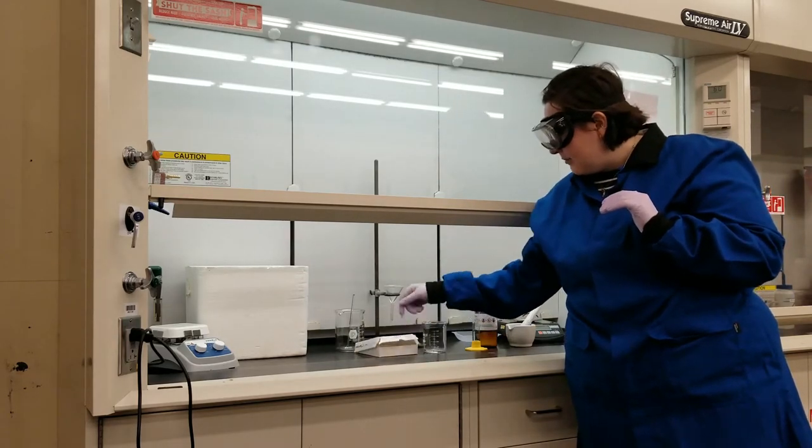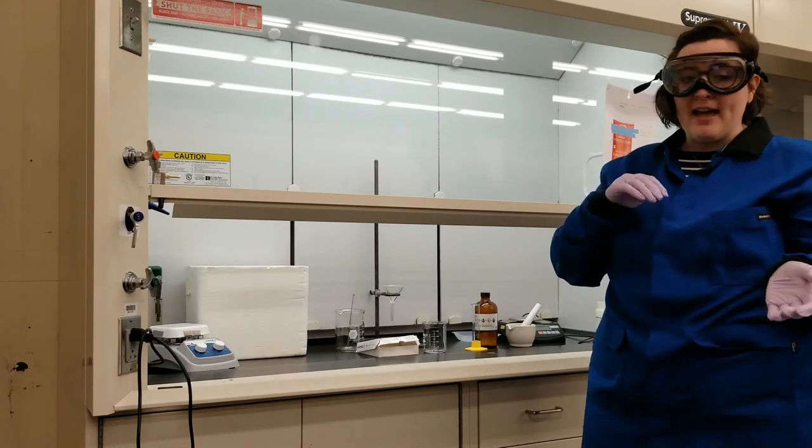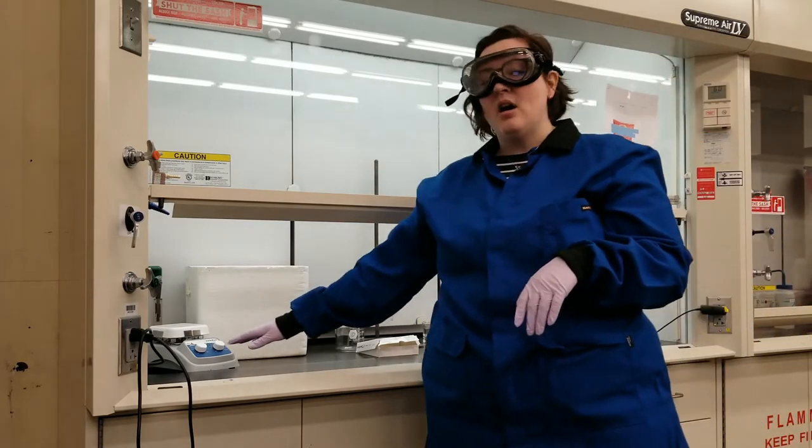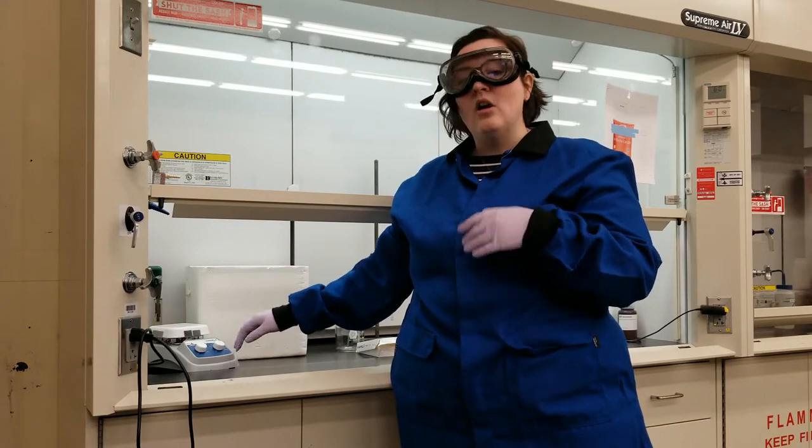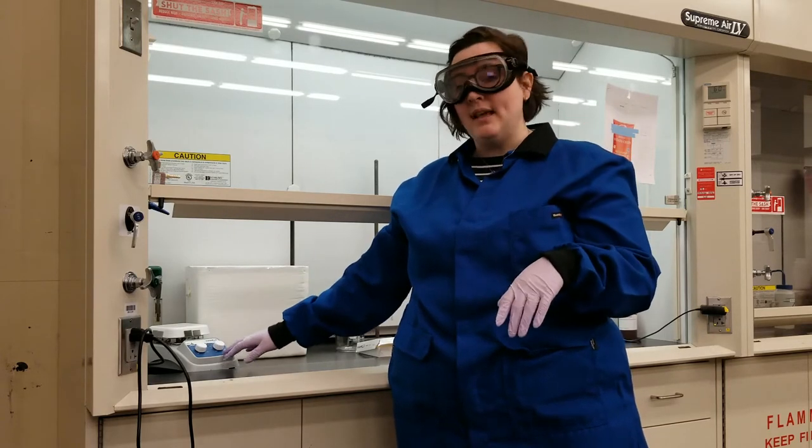Then I'm going to want a way to separate my dissolved fats from my solvent, which is going to be a hot plate. I'm going to gently heat the hexane on the hot plate until all the hexane evaporates off, and I'm just left with my fats.